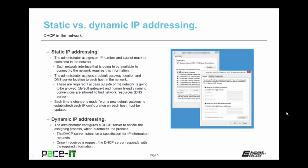The administrator assigns an IP number and subnet mask to each host in the network — whether it be a PC, router, or other electronic equipment. Each network interface that will connect to the network requires this information. The administrator also assigns a default gateway location and DNS server location to each host. These settings are required if access to outside networks is going to be allowed — through the default gateway — and if human-friendly naming conventions are going to be used — through a DNS server. Each time a change is made, each IP configuration on each host must be updated, which is why it becomes cumbersome as the network grows.